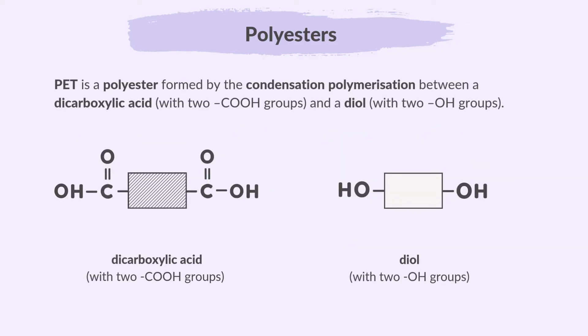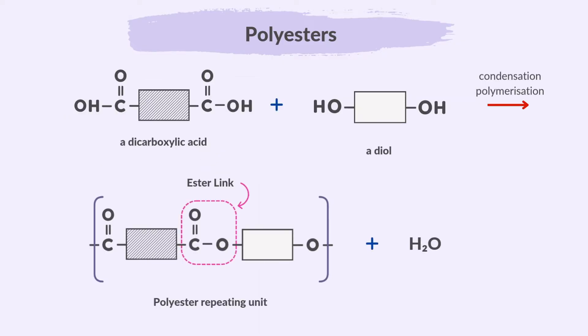PET is a polyester formed by the condensation polymerization of a dicarboxylic acid with two COOH groups and a diol with two OH groups. You are not required by your syllabus to know the full name for PET. Each repeat unit in PET contains an ester linkage, or COO linkage, formed by the reaction of the hydroxyl group from the diol and the carboxylic acid group from the dicarboxylic acid. During this reaction, a water molecule is formed.